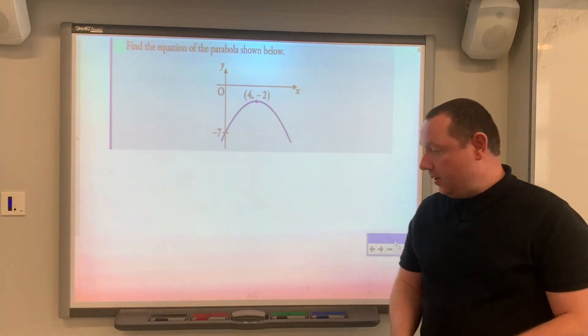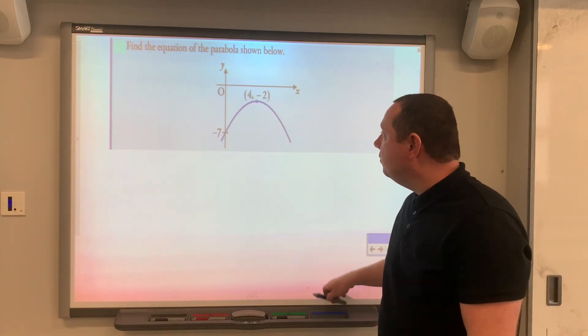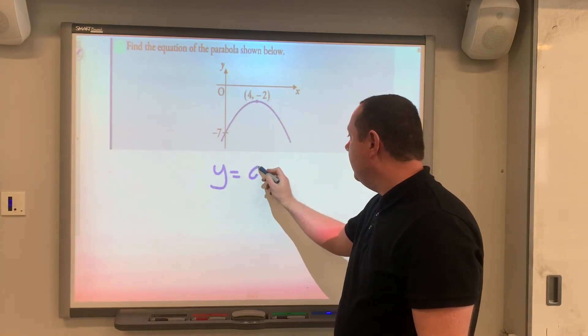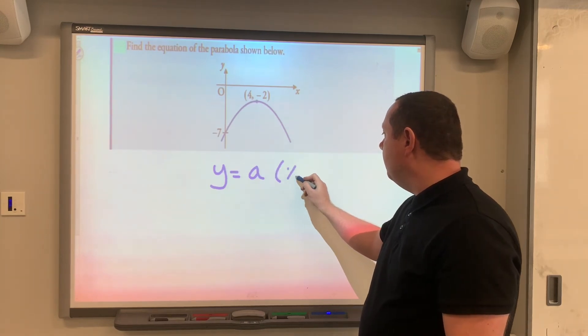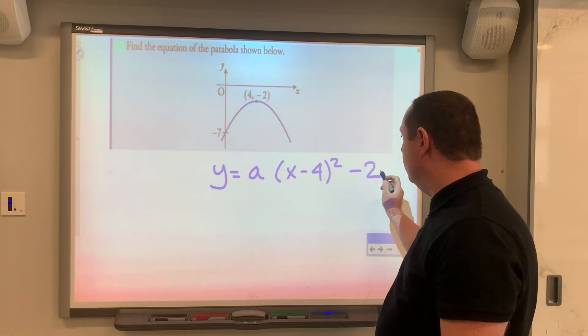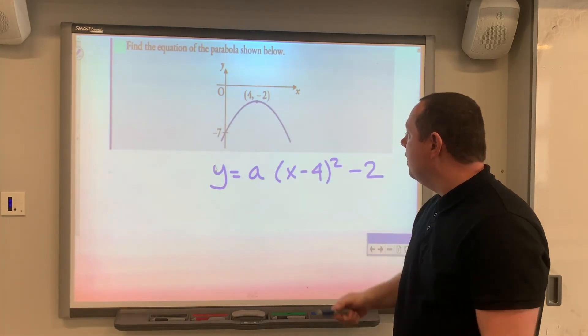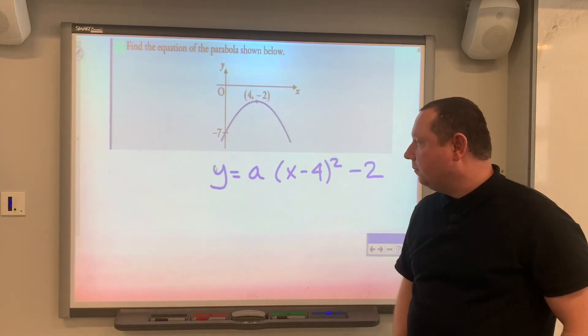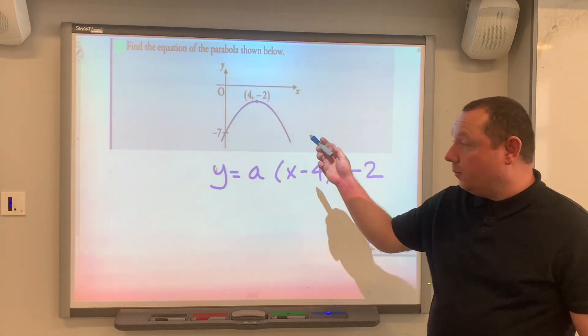To find the equation of the parabola, remember from National 5, y must equal a(x minus 4) squared minus 2, because we've got -2 here, and we've got (4,-2) as the turning point.